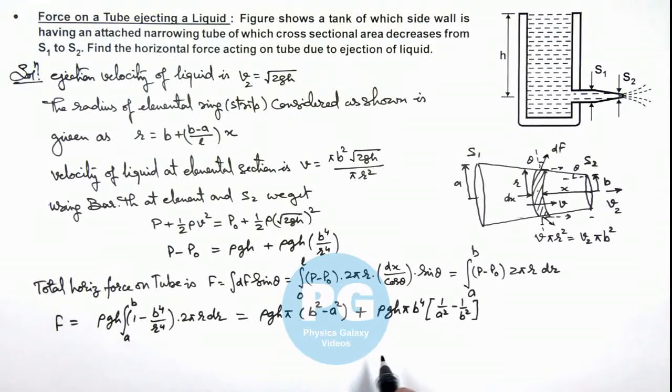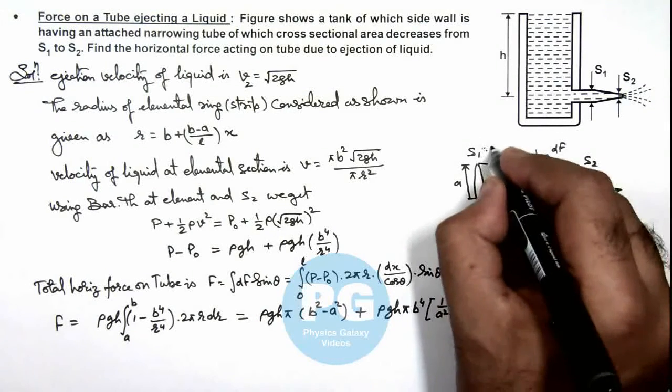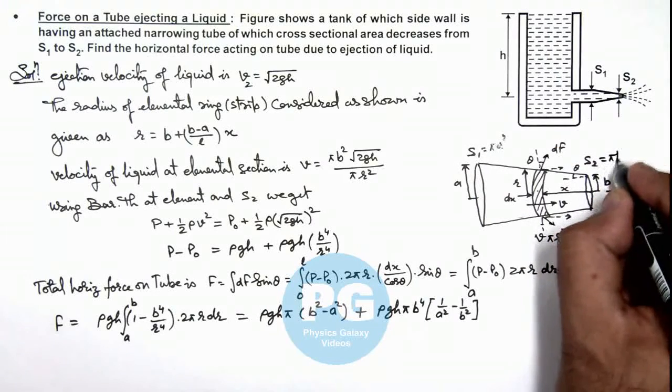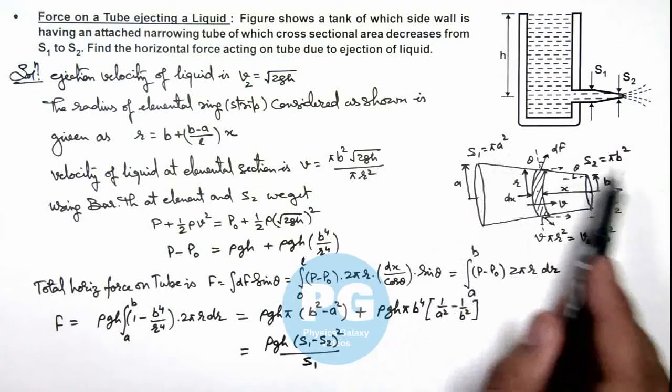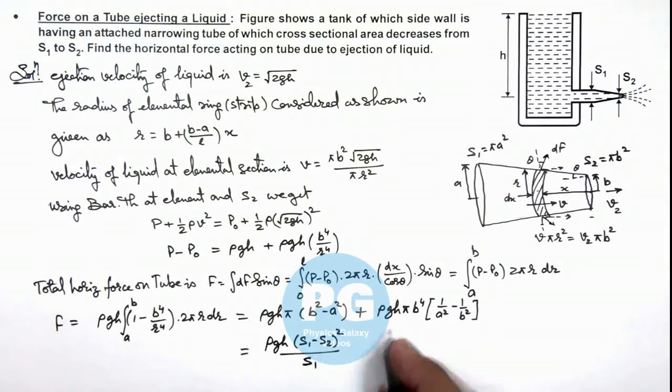And in this situation, when we further simplify this result and substitute here S₁ as π·a² and S₂ as π·b², on simplifying this result, the final result you'll be getting is ρgh multiplied by (S₁ - S₂)²/S₁. I am leaving it as an exercise for you to evaluate and verify the result by substituting S₁ as π·a² and S₂ as π·b². The final result will be this, which is the final answer for this problem.